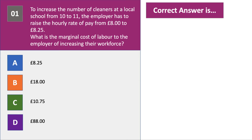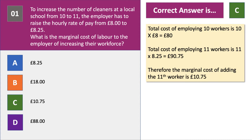So they're adding one extra person to the payroll. They have to lift the pay from £8 to £8.25. What's the marginal cost of doing that to the firm? The answer is C, £10.75.